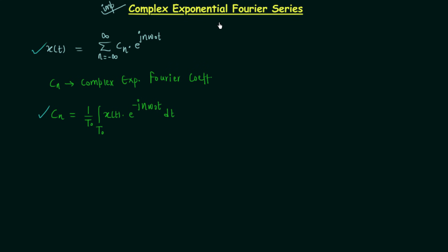You can convert complex exponential Fourier series to trigonometric Fourier series and vice versa. Therefore, there must be some relation between aₙ, bₙ, and cₙ, where aₙ and bₙ were the coefficients in the trigonometric Fourier series expansion and cₙ is the complex exponential Fourier coefficient. In the coming presentation we will see the relation between aₙ, bₙ, and cₙ.